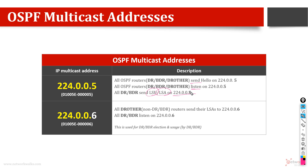Now for 224.0.0.6: this address is used by DR-other routers — that is, non-DR and non-BDR routers. There are three types: DR, BDR, and DR-other. All DR-other routers send their LSAs on .6, and all DR and BDR routers listen on .6. So DR-other sends and DR/BDR listens.